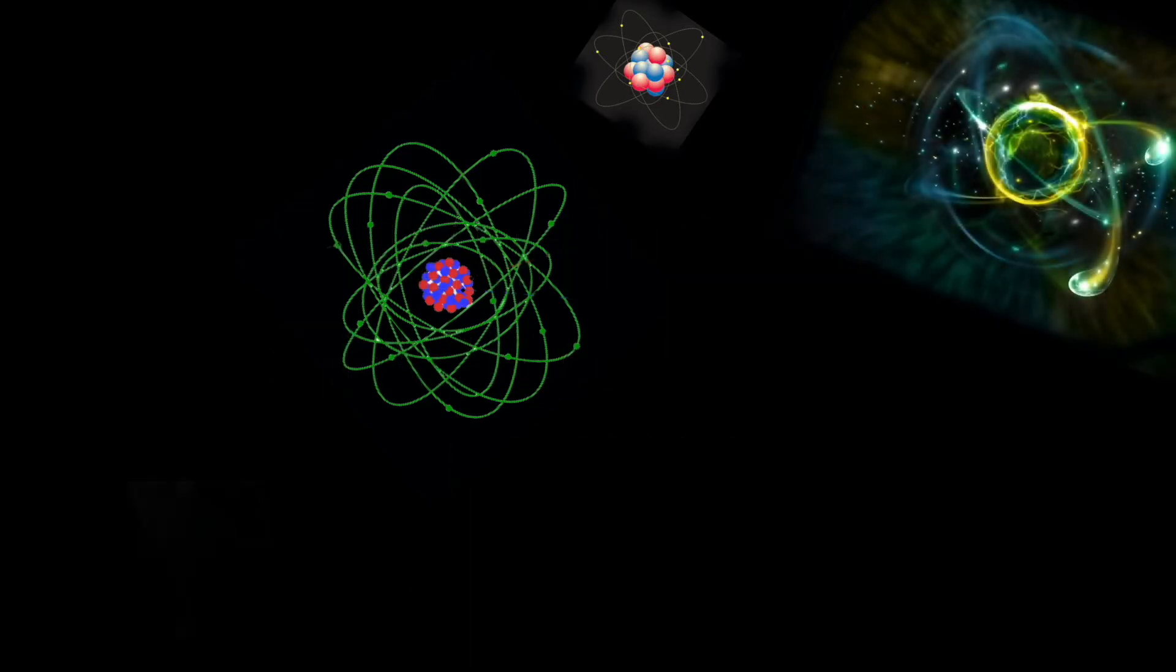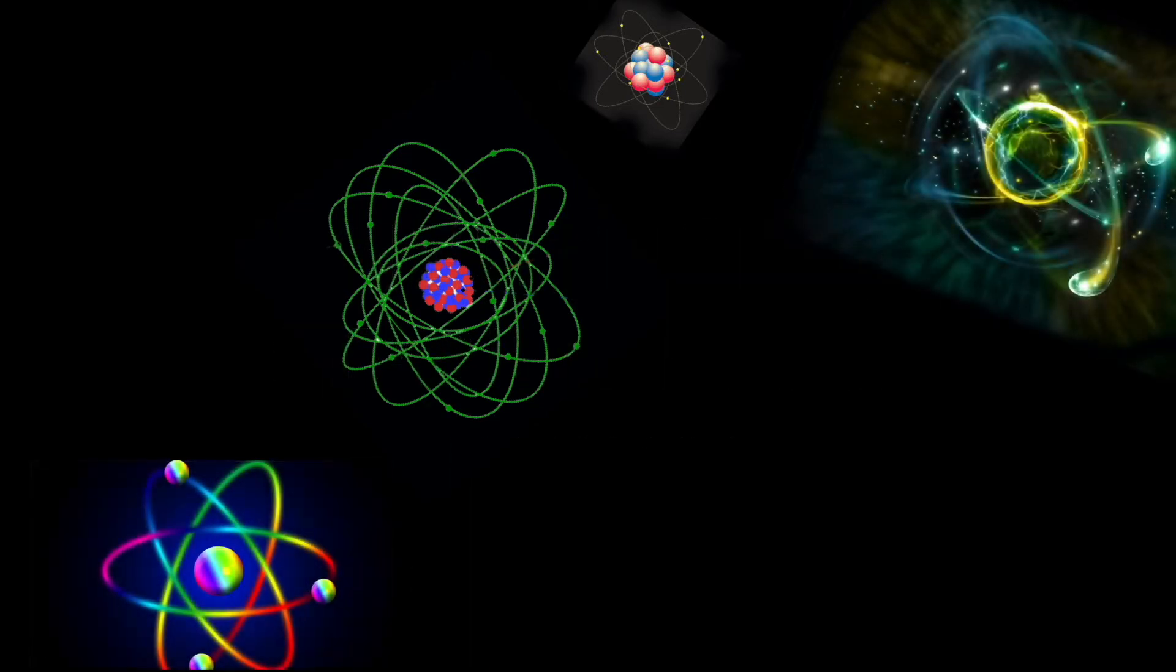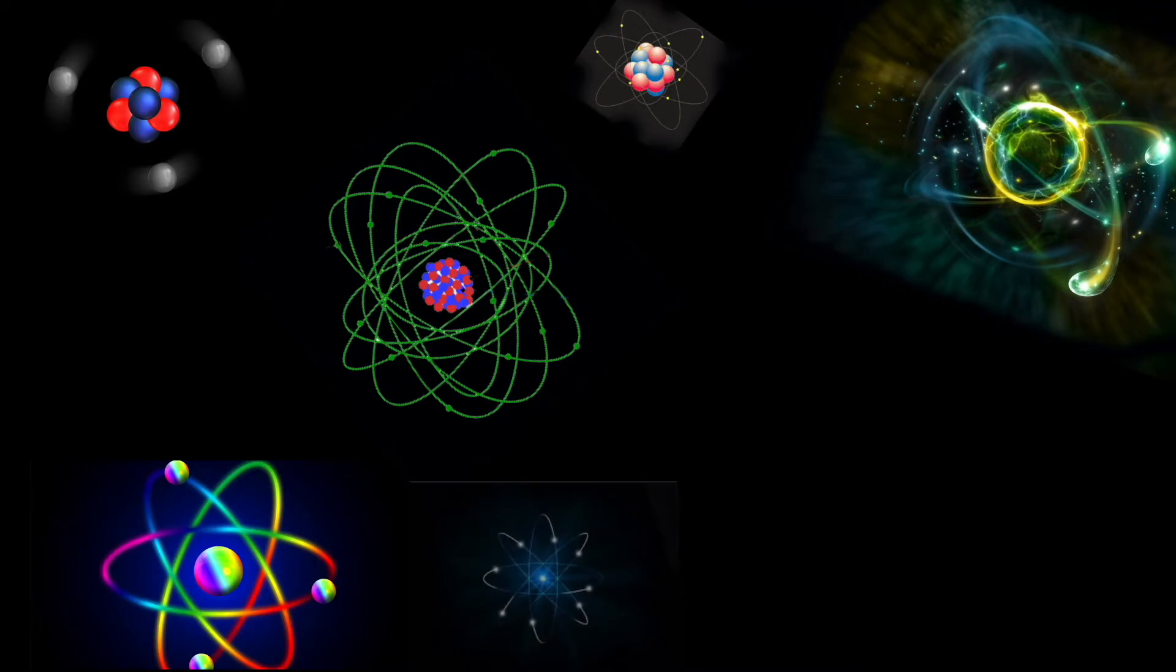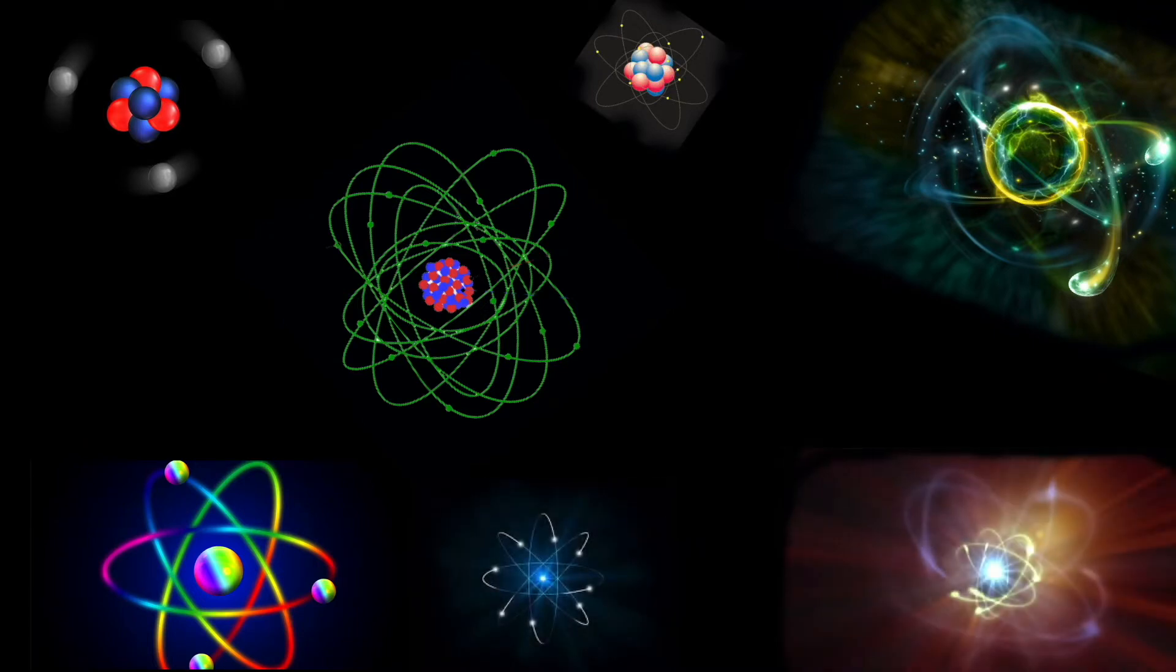These pictures of atoms are typical but they're unrealistic. However, they do show the relative positions of the protons and neutrons in the nucleus and the electrons surrounding it.